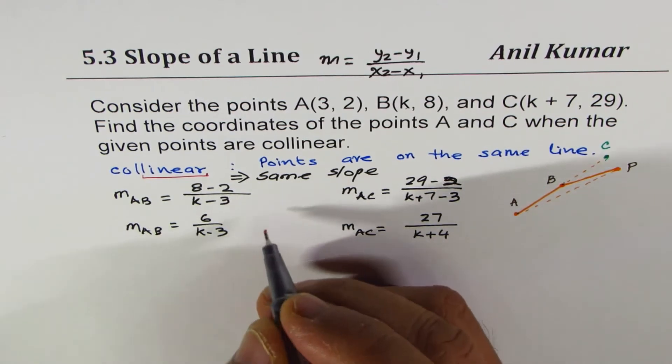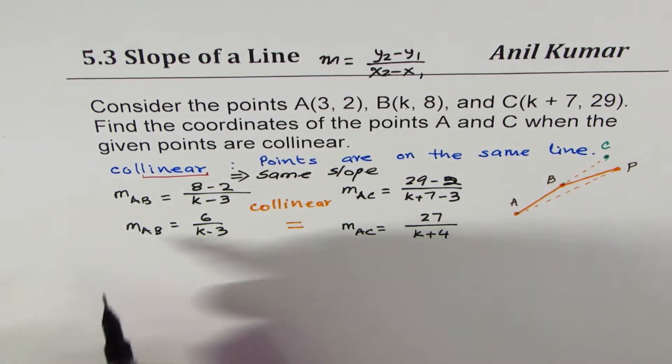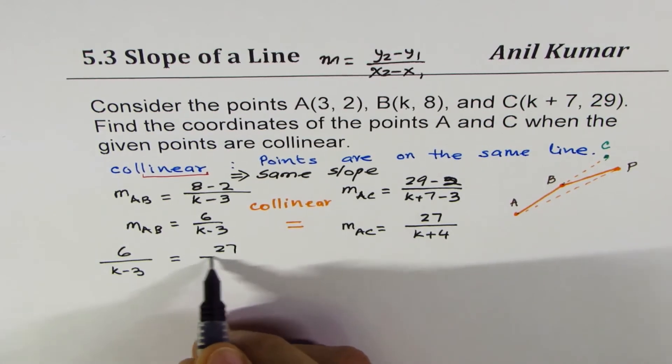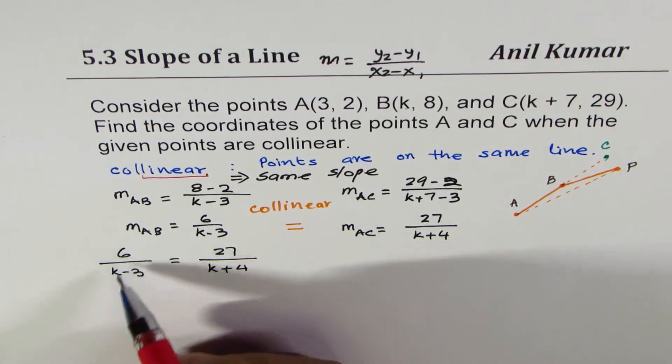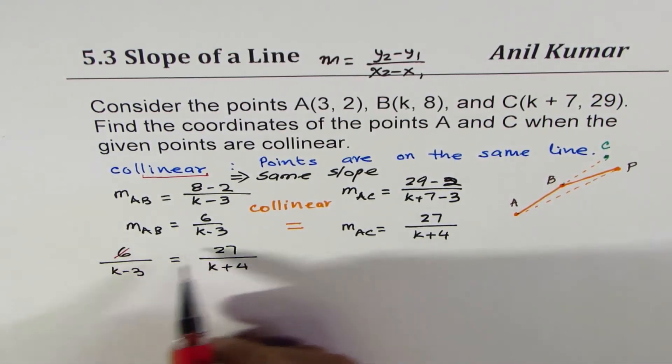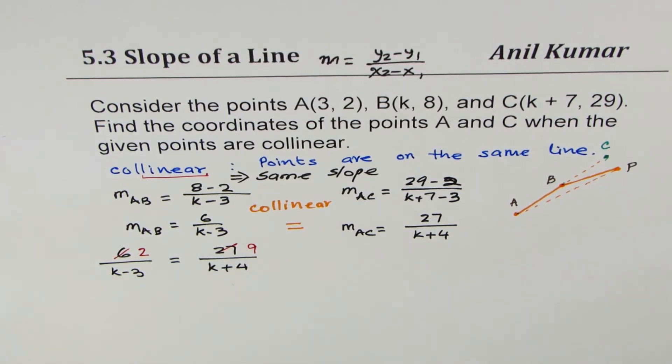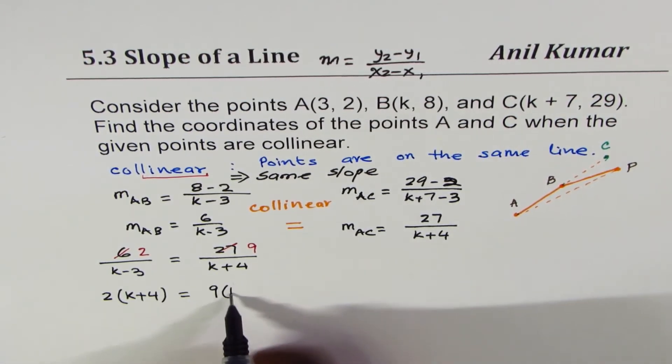Now, for them to be collinear, when you say they are collinear, that means these two slopes are equal. We can form an equation, which is 6 over K minus 3 equals to 27 over K plus 4. Now, you can actually simplify this a bit. You can divide both by 3. It's better to simplify, because when we just cross multiply, we are left with bigger numbers. Divide by 3, we could write this as 3 times 2 is 6 and 3 times 9 is 27. First we'll simplify. It's a good practice to simplify and then do. And now, we'll cross multiply. We'll get 2 times K plus 4 equals to 9 times K minus 3.